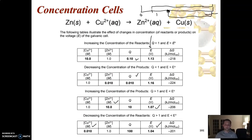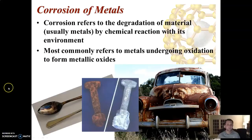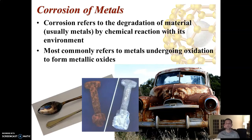Next, we're going to look at corrosion of metals, which ties directly into electrochemistry. Corrosion refers to the degradation of a material — most likely metals — by a chemical reaction with the environment. The most common form is rusting, also called oxidation, where a metal undergoes oxidation and forms a metallic oxide. Rust is simply iron oxide.